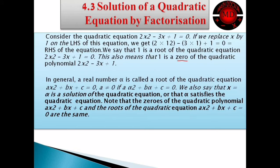In general, a real number alpha is called a root of a quadratic equation. A real number alpha which satisfies the particular quadratic equation is called its root. For ax squared plus bx plus c equals 0, where a is not equal to 0, if we put alpha in place of x and the equation is satisfied, then alpha is a solution.